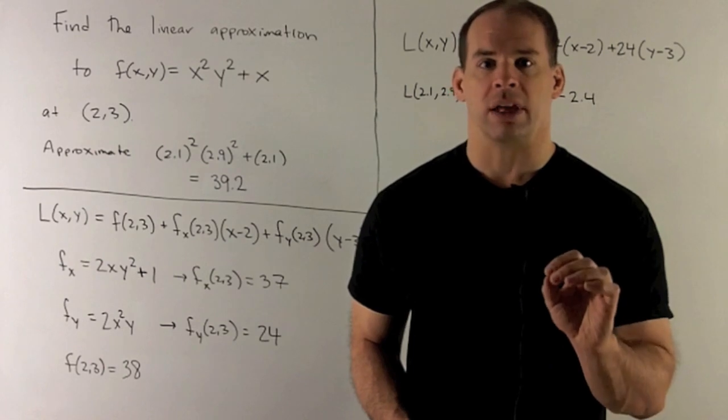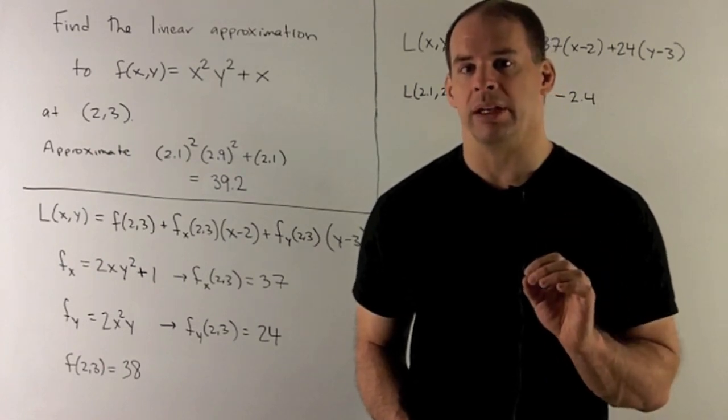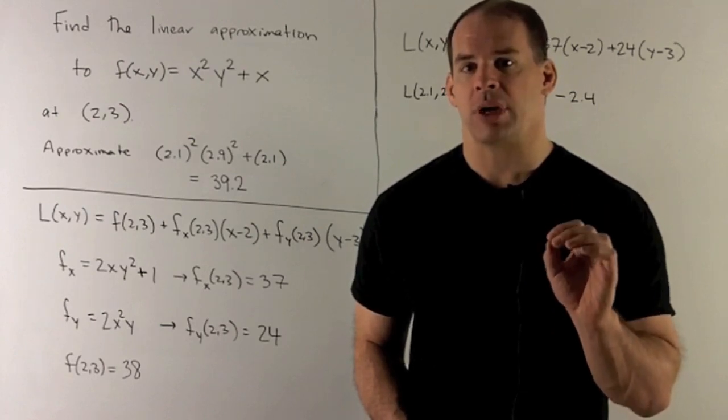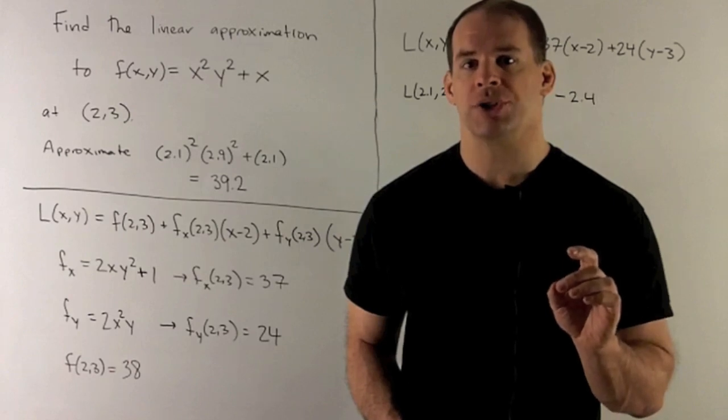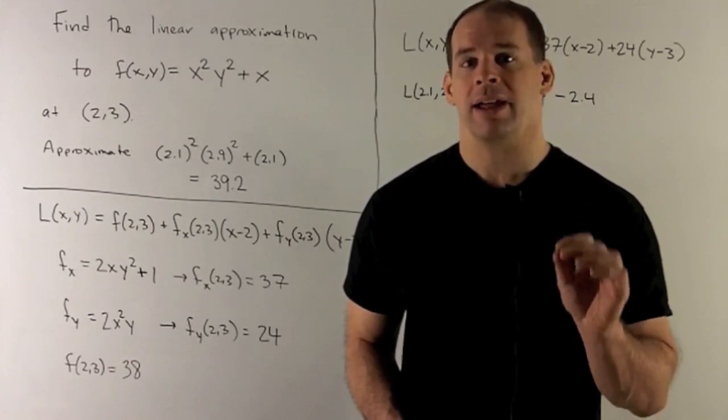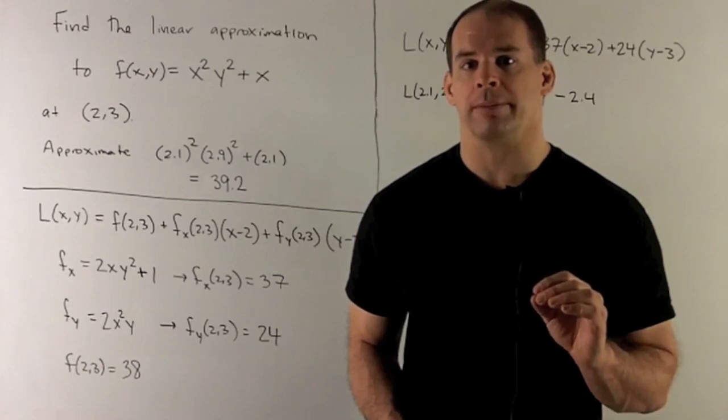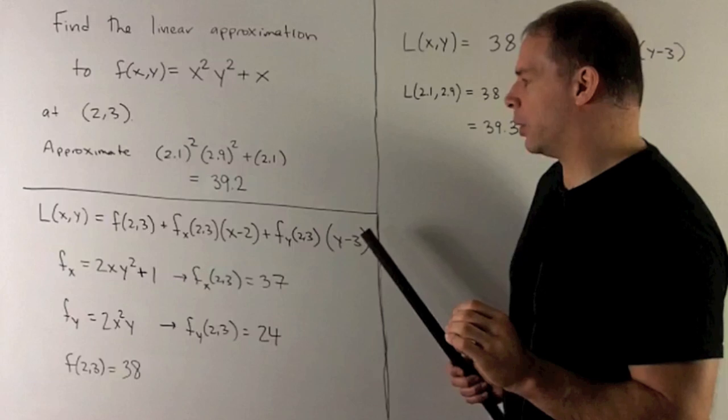So we write down our formula for linear approximation. What items will we need? We'll need our function evaluated at (2, 3), we'll need both first partials - partial with respect to x, partial with respect to y - and then we'll need to evaluate those at our point. Once we have that, we load everything into the equation here.